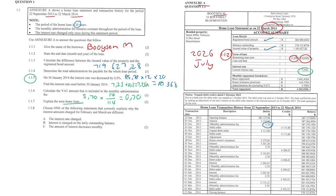The last question: choose the statement that correctly explains why the interest amounts charged for February and March are different. It is not that the interest rate changed — interest is charged on the outstanding balance. The interest rate stays exactly the same, but since we're paying more each month we owe less, so our interest decreases. The answer is B.